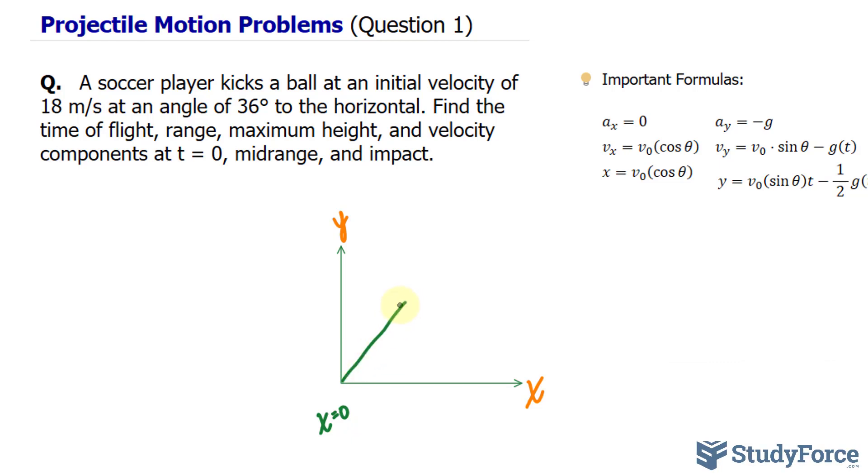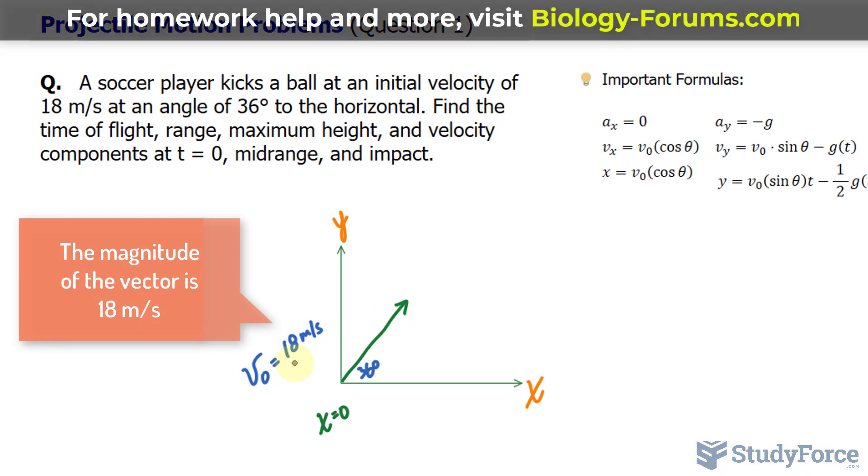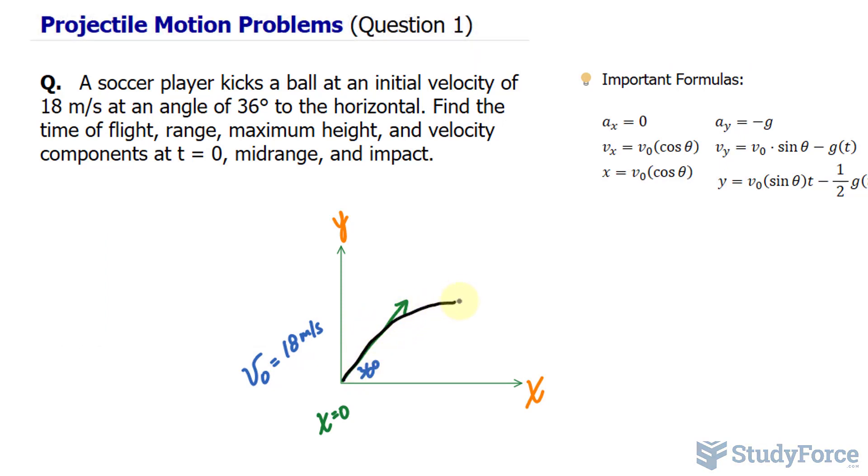Right at the beginning, we have an angle of 36 degrees, and the initial velocity, which I'll represent as v₀ is 18 meters per second. So this vector here represents 18 meters per second. Now what's interesting about a ball being kicked is that it will take on a parabolic trajectory. So it will look like this, reach a maximum...